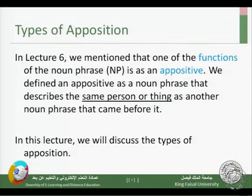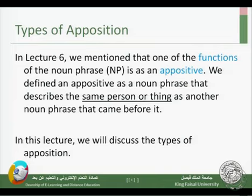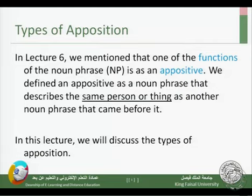We can define opposition as a noun phrase that describes the same person or thing as another noun phrase that came before it. So we have two noun phrases: one comes after the other, there is nothing between them — no 'and' or 'but' — they come right after each other and both describe the same person or thing.